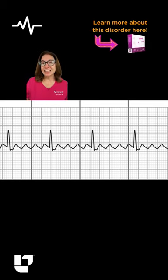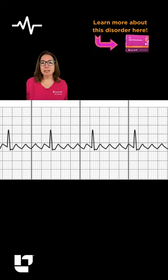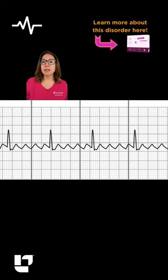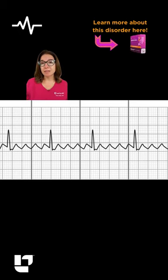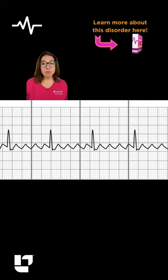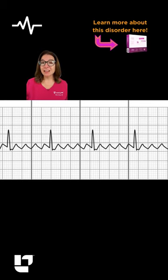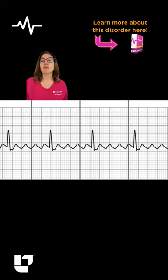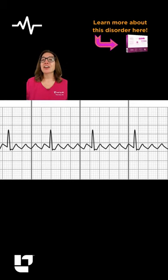On an EKG, QRS complexes will be uniform in appearance and under 0.12 seconds. However, P waves will be absent, and instead you'll see multiple sawtooth waves before each QRS complex.